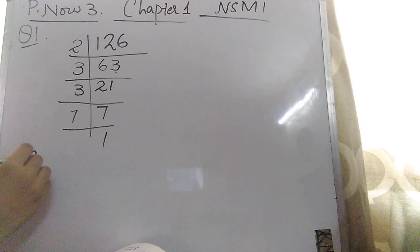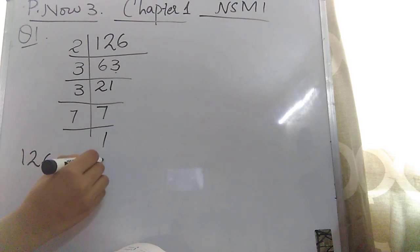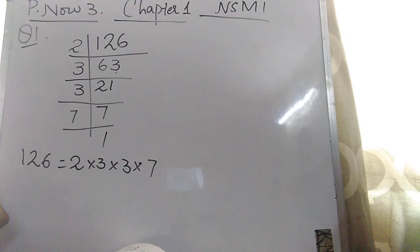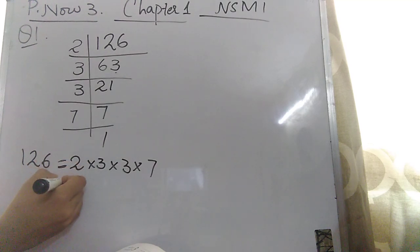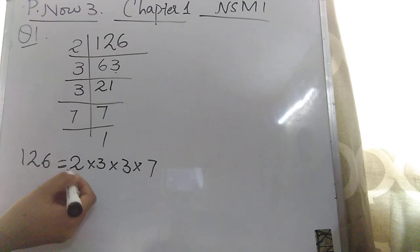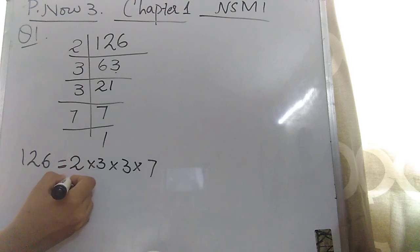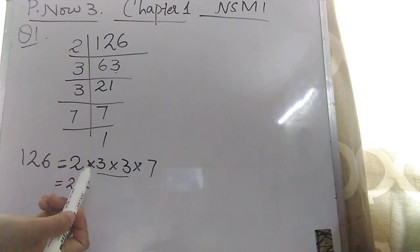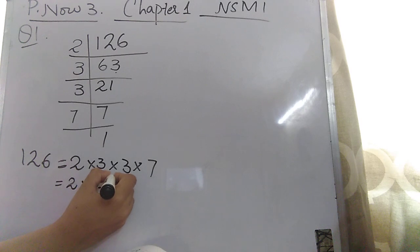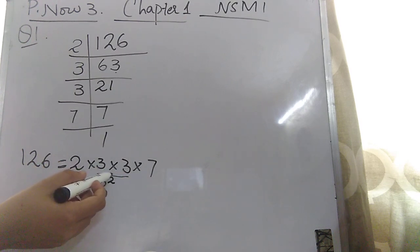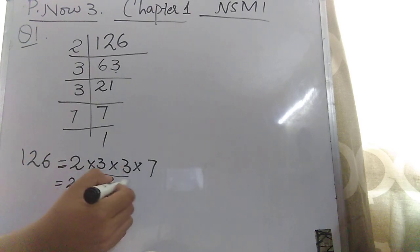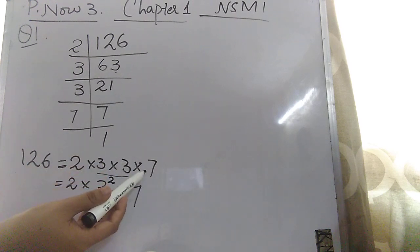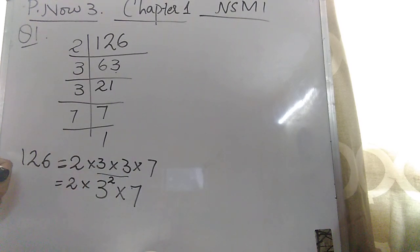The prime factors of 126 are 2, 3, 3, and 7. As mentioned in the question, we have to write the answer in index notation — that is, in the form of powers. The 2 is single, so we write it as is. There are two 3s, so we write 3 squared. The index (power) is 2. Then 7 is single, so we write it as is. The answer is 2 × 3² × 7.